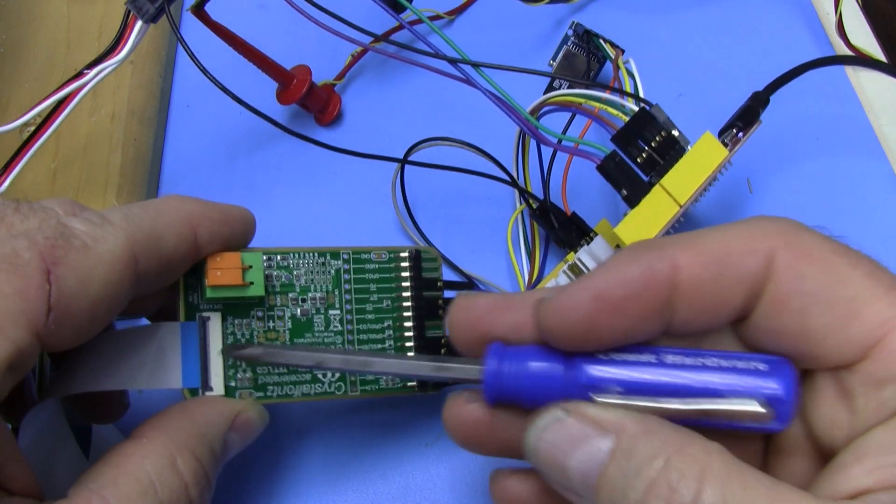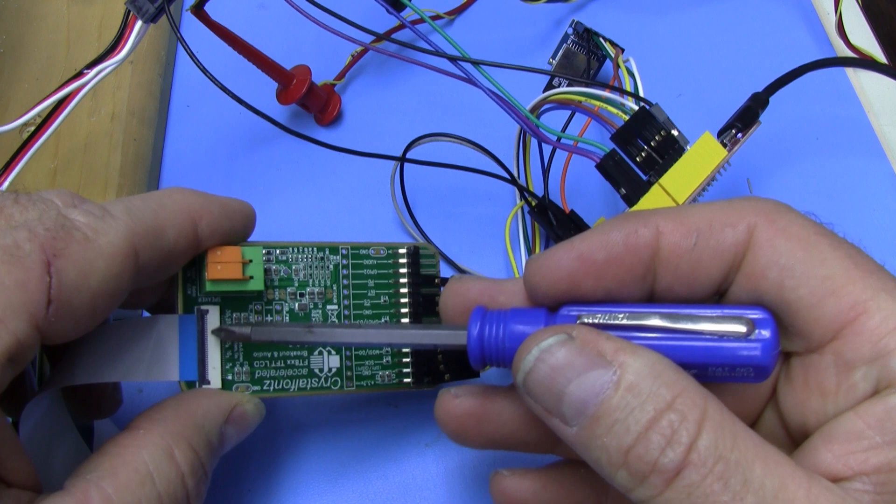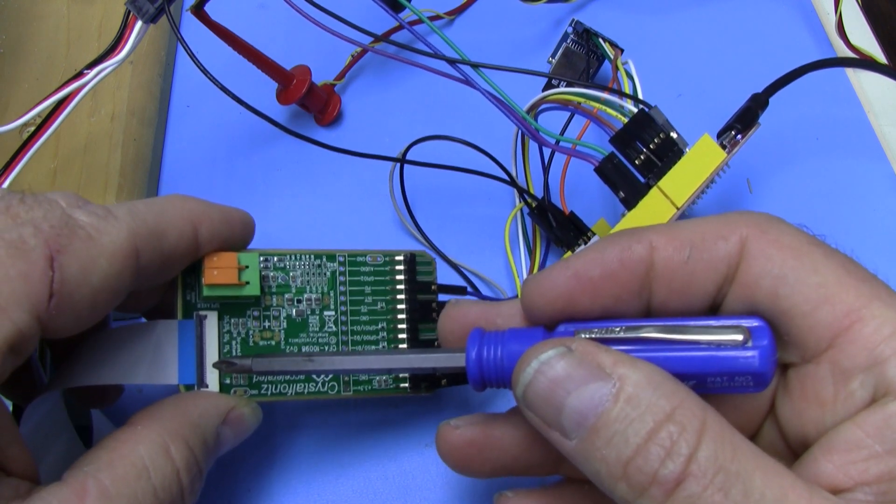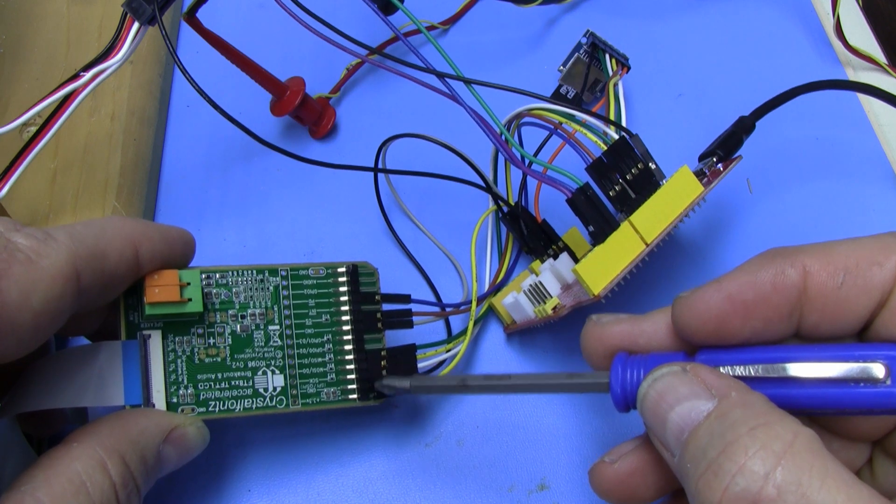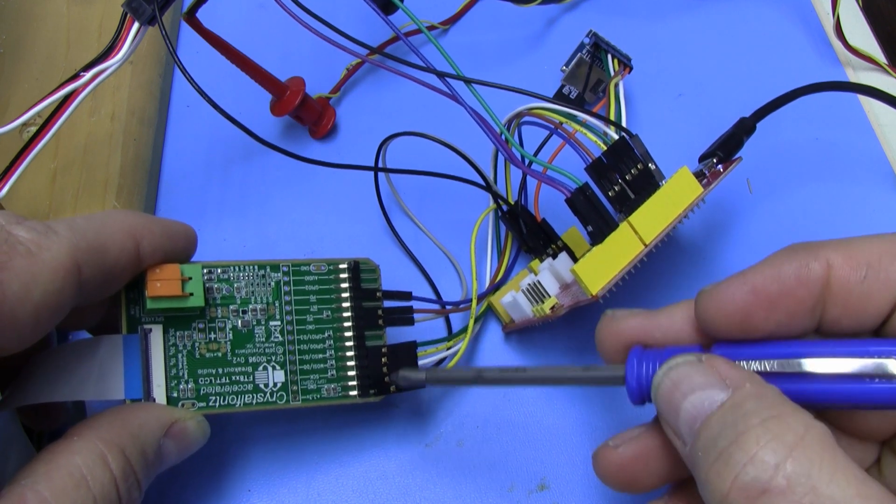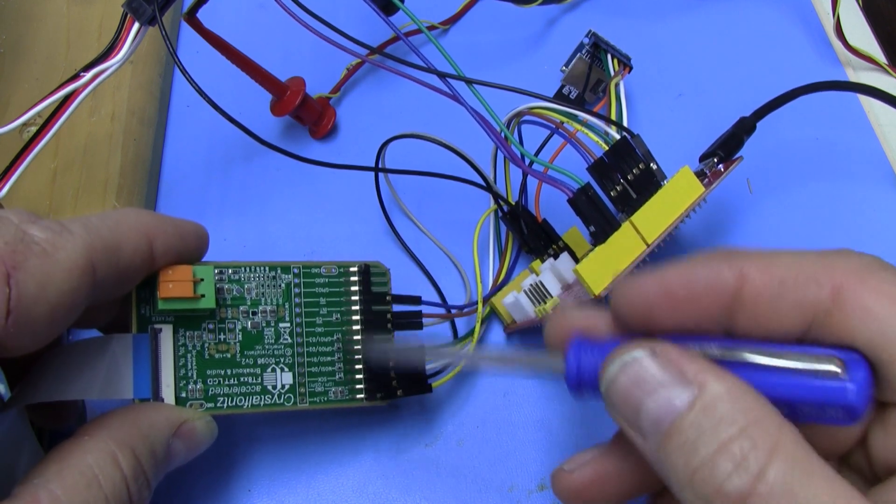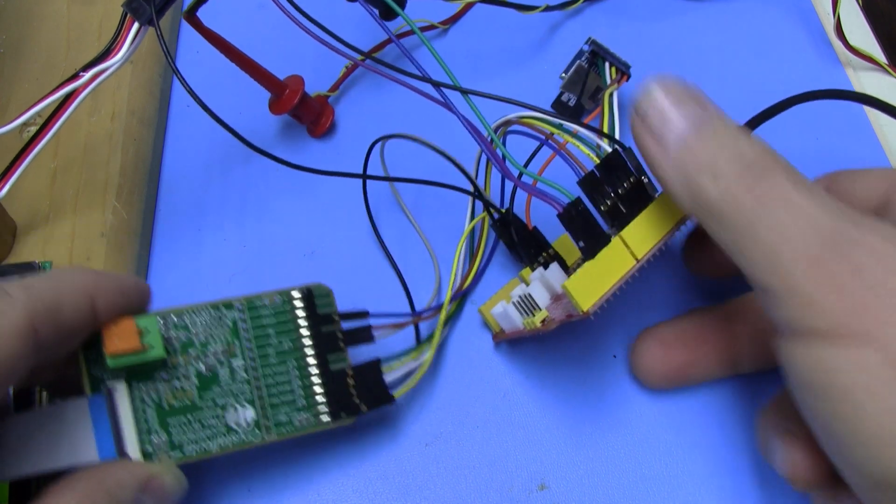This adapter board simply goes from the 30 pin connector of the FTDI that's very compact and low profile for production applications, and it gets it out here to the tenth inch center Mundo type headers. It has labels on there and has some resistors for debounce and everything.